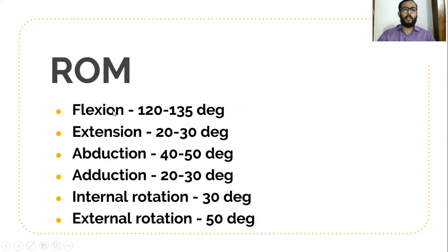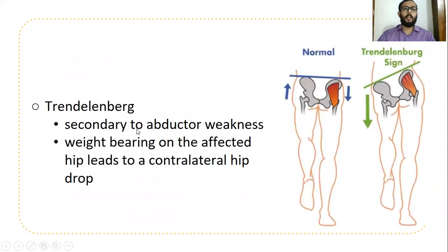Coming to the range of motion of the hip — hip is the second largest joint of our body, second to the knee joint. Regarding ROM, the hip is second to the shoulder joint in mobility also. These are the normal range of motion of the hip joint.